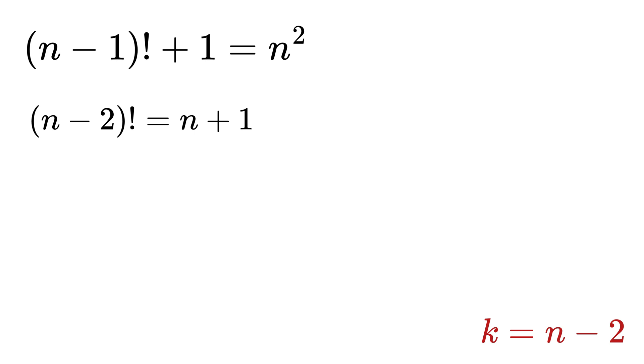Now let us substitute a variable k as n minus 2. So take 2 to this side to get n equals k plus 2, and hence n plus 1 equals k plus 2 plus 1, or k plus 3. Hence, this equation can be rewritten as k factorial equals k plus 3.